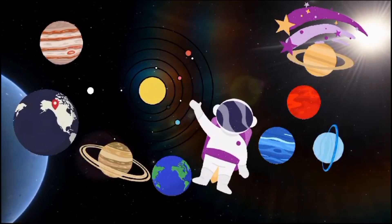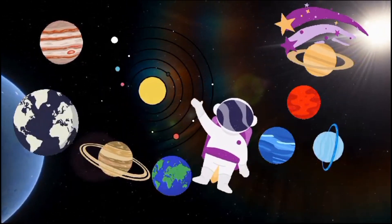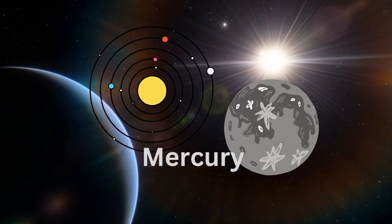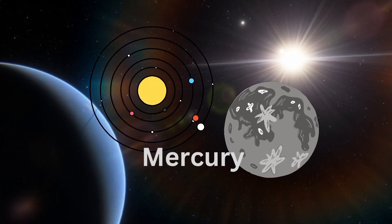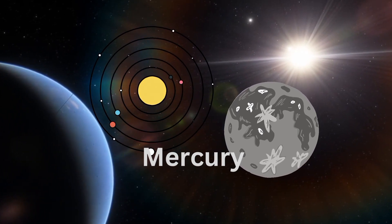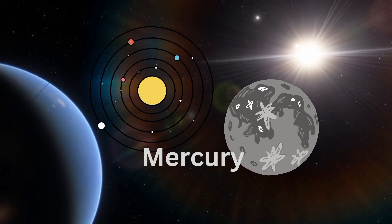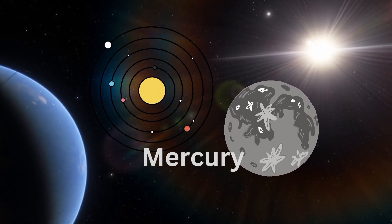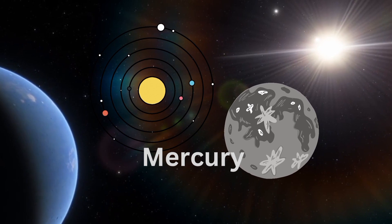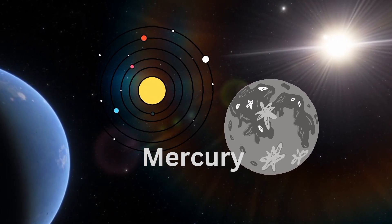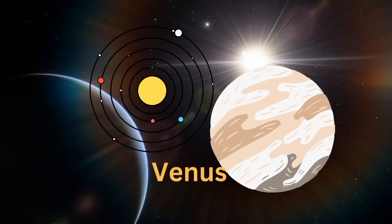My name is Mercury. I'm the second hottest planet, the closest one to the Sun. A year on my surface is 88 days. I'm the smallest but I'm lots of fun.